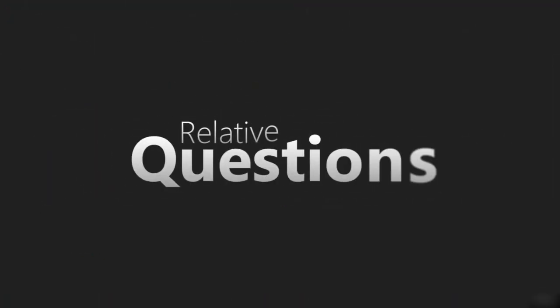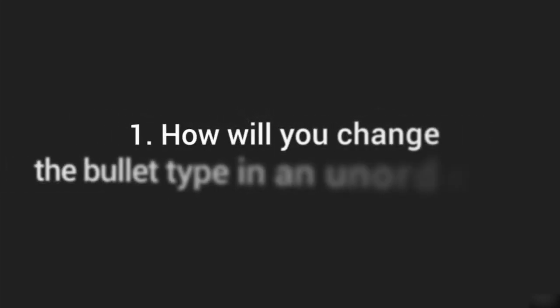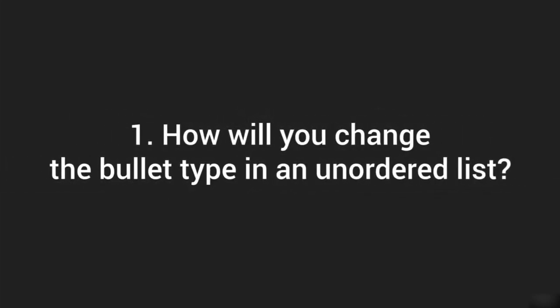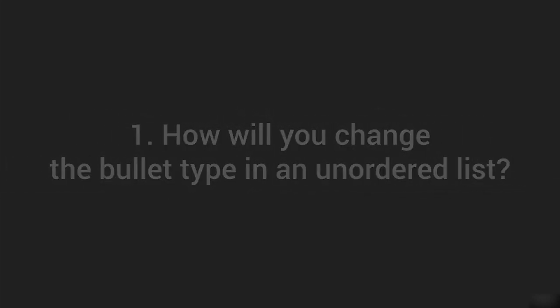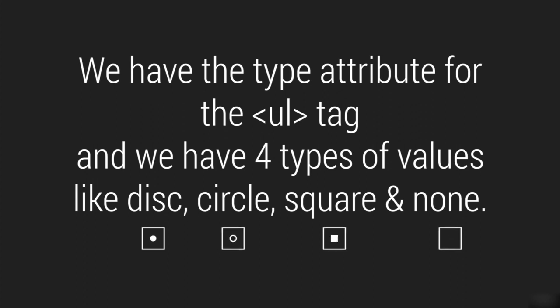Let's talk about a relative question: how will you change the bullets in an unordered list? As discussed, we have the type attribute with four types of values: disk, circle, square, and none, which we have seen practically. This is how you change the bullet type.